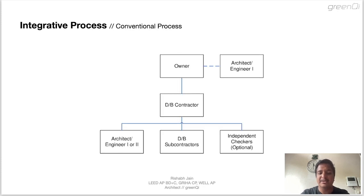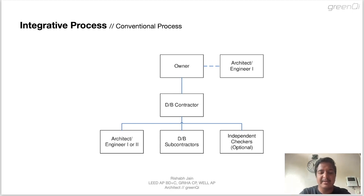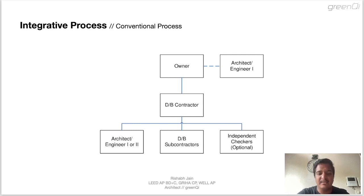Let's say a client wants to build a commercial tower. He will first hire an architect and ask him to make a design. The architect will come up with a design in consultation with the client and prepare good-for-construction drawings and cost estimate. The client will invite bids for construction based on the cost estimate and construction drawings provided by the architect, and choose an appropriate contractor to carry out the work. The contractor then appoints subcontractors such as electrical, plumbing, HVAC and other things to carry out the work.